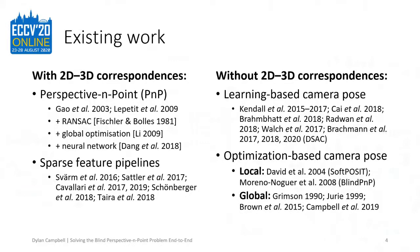Other work takes an optimisation approach to solving the joint correspondence-pose problem, including those that require pose priors, and some more recent work that applies global optimisation. However, these optimal methods are time consuming and limited to a moderate number of points, unlike our orders-of-magnitude faster approach.